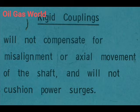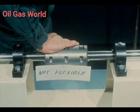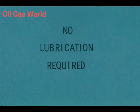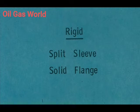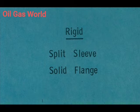Because of the solid connection of a rigid coupling, it does not offer very many advantages. It will not compensate for misalignment of the shafts or for axial movement of the shaft, and it will not cushion power surges. This is true of both the sleeve and the flange coupling because of their rigid construction — they are not flexible and will not absorb misalignment or any type of shock. The one advantage of the two rigid couplings is that neither of them require lubrication since there are no moving parts to create friction. The two types of rigid couplings are the split sleeve and the solid flange.